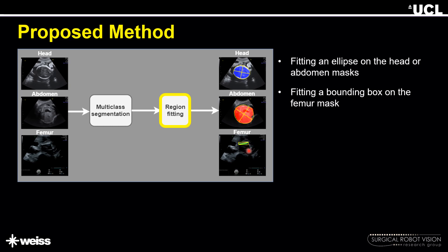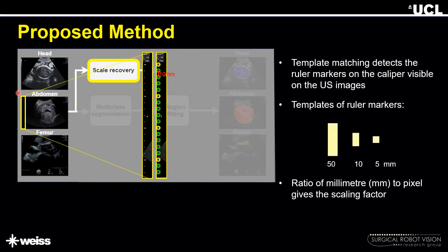The measurements obtained from region fitting are in pixel units, but we want them in millimeter units, so we perform scale recovery. Every ultrasound machine has a caliper which can be automatically detected to obtain the millimeter-to-pixel ratio. We use template matching to detect the ruler markers on the caliper visible in the ultrasound images. The ruler markers in our dataset were 50, 10, and 5 millimeter markers. Note that this is dependent on the ultrasound machine interface used; our data was captured from a GE Voluson E8 machine.